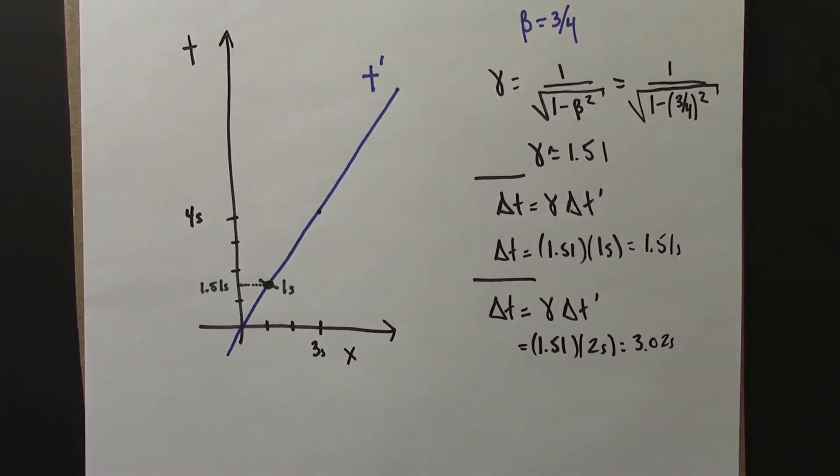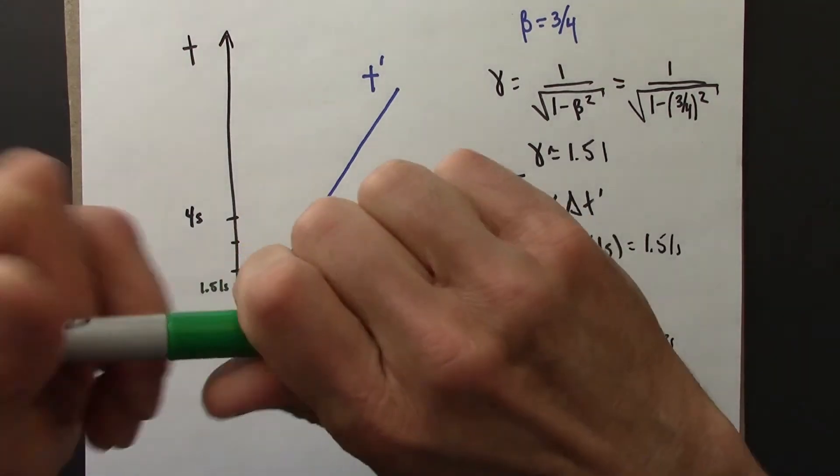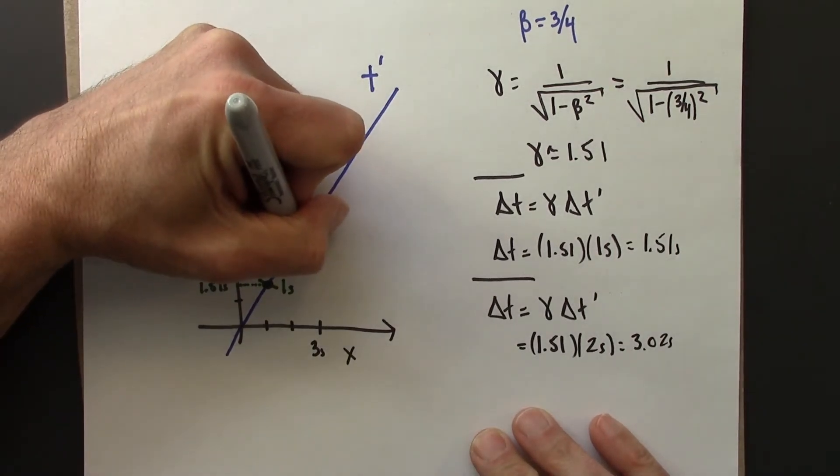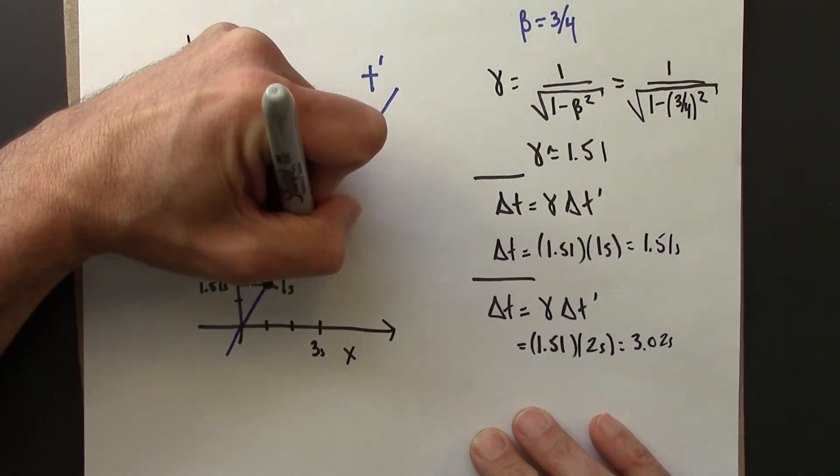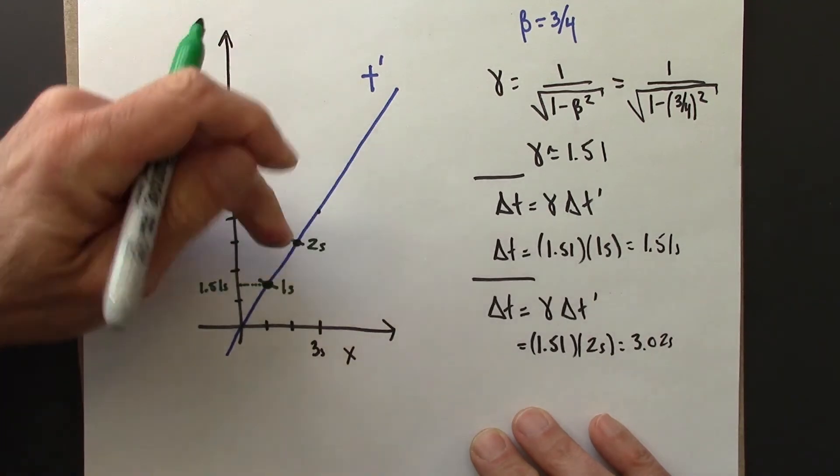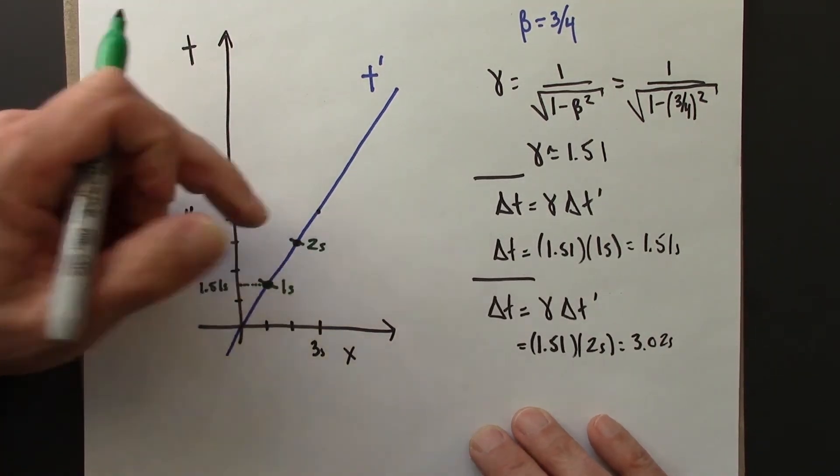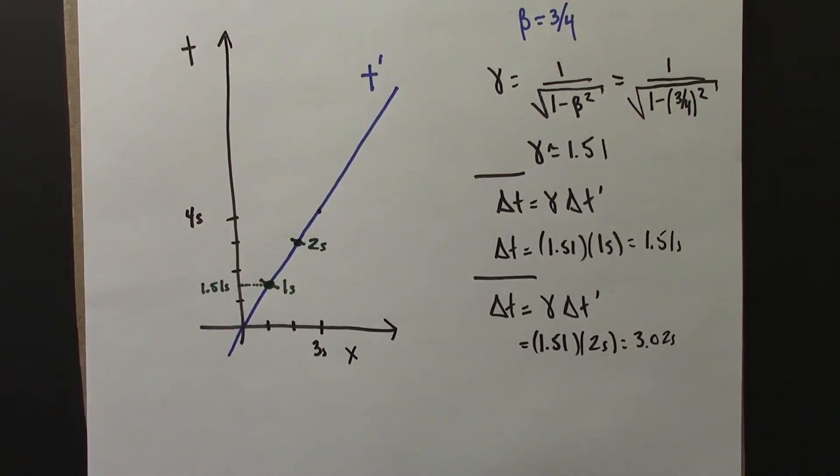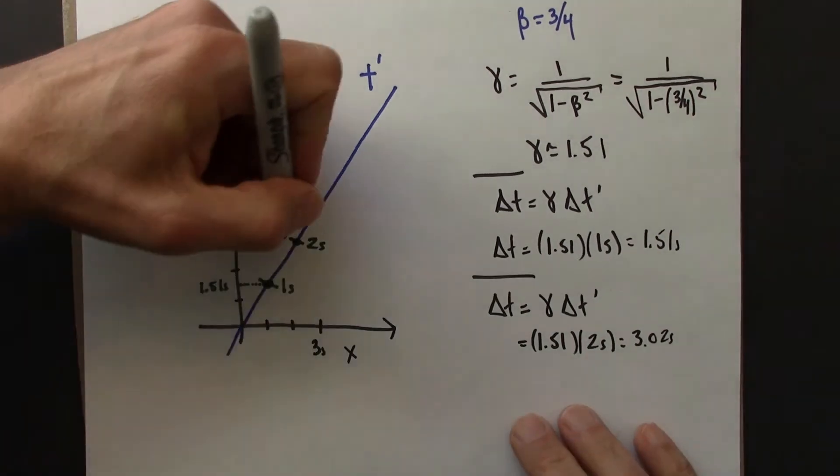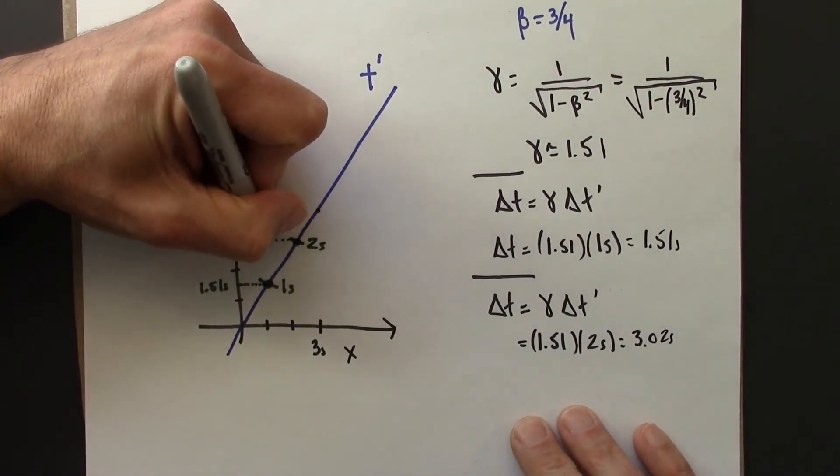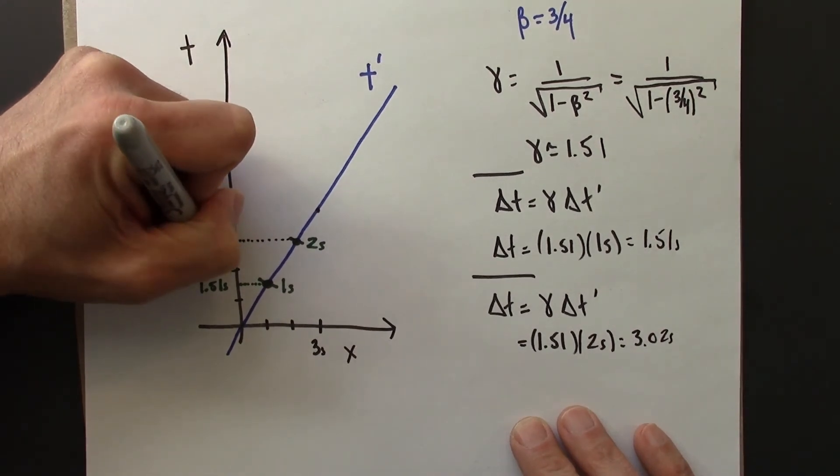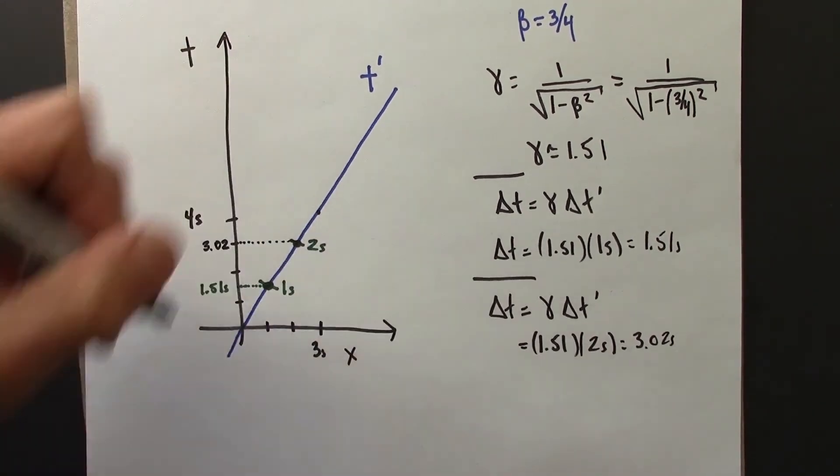So that tells me that right about there, that would be when Beowulf's clock says 2 seconds, and that would correspond to Anna's reading of about 3.02.